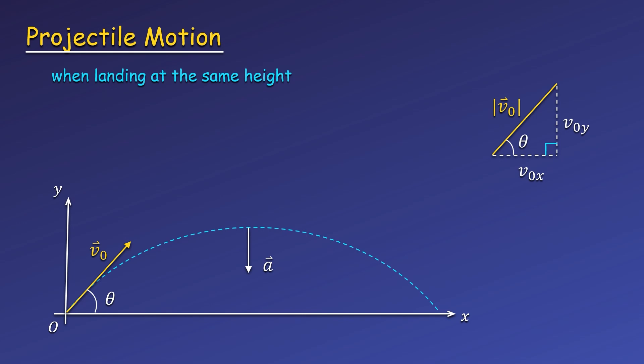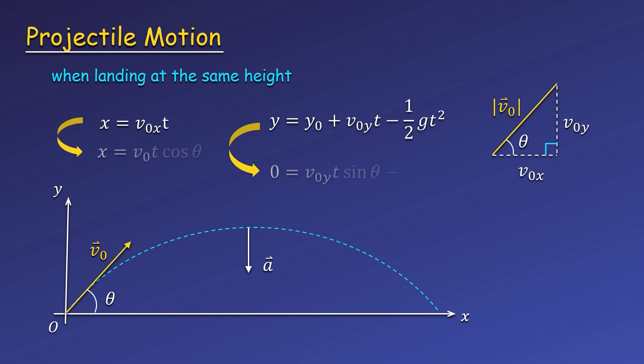These are still true in projectile motion, since adding in a horizontal component of motion does not affect the motion in the y direction. We can also look at the distance an object would travel if it lands at the same height it was launched. We can write an equation for the x and y position and substitute v-naught-x and v-naught-y found using our right triangle.